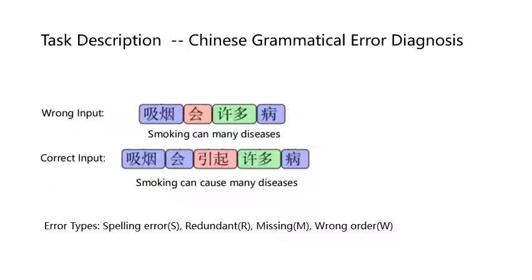There are three other kinds of error types including spelling error which means a bad selection, redundant which means extra words, and wrong order which means a word order error.